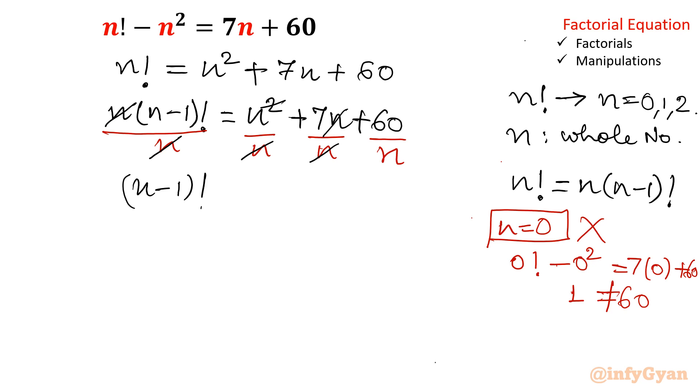n minus 1 factorial is equal to n plus 7 plus 60 over n.